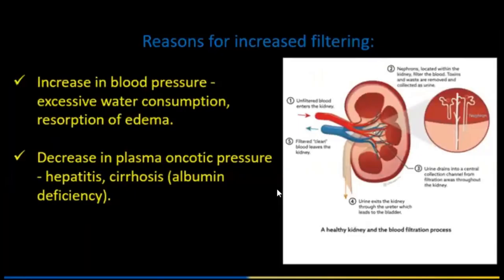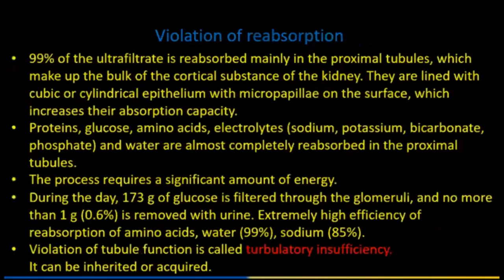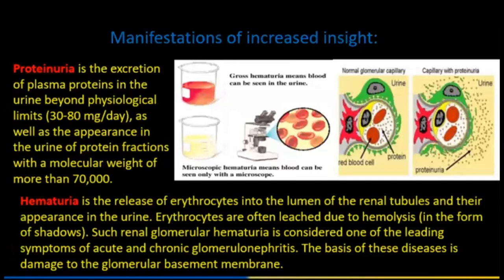Reasons for increasing filtration: increase in blood pressure, increased water consumption, resorption of edema, decrease in plasma oncotic pressure, hepatitis, cirrhosis with albumin deficiency. Manifestations of increased filtration include proteinuria — expression of plasma proteins in the urine — and hematuria, with release of erythrocytes into the lumen of the renal tubules and their appearance in the urine.